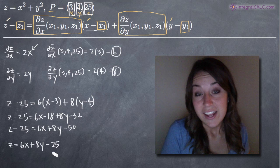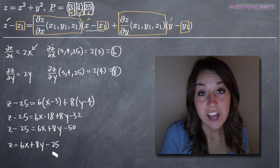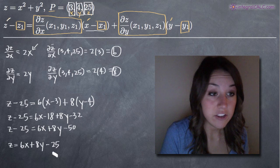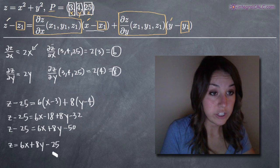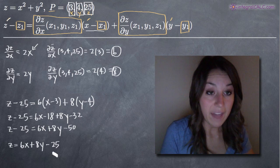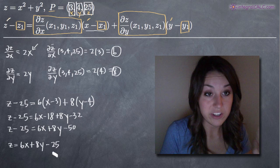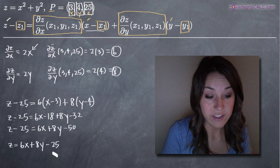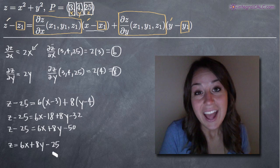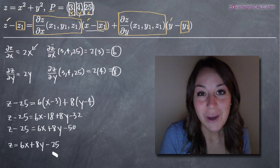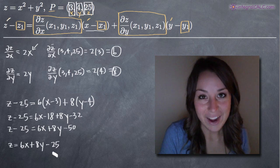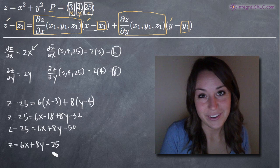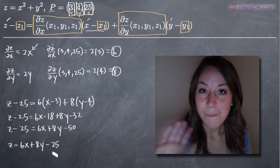So our final answer is z equals 6x plus 8y minus 25. That's the equation of the tangent plane of this function z at the point P, which is (3, 4, 25). I hope this video helped you guys, and I will see you in the next one. Bye!